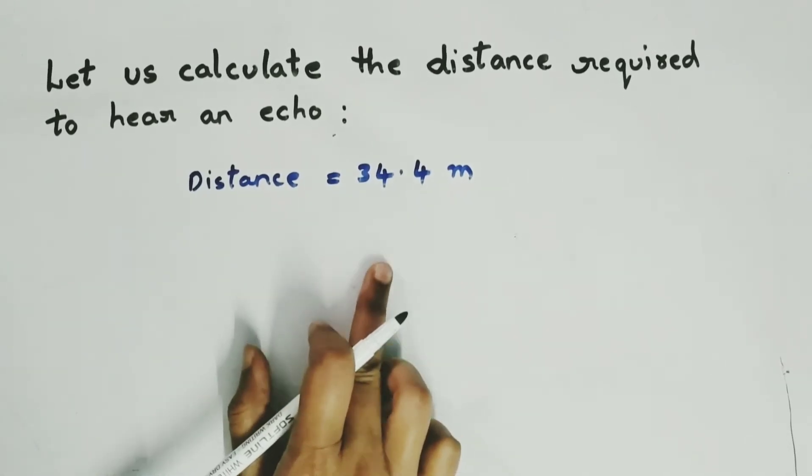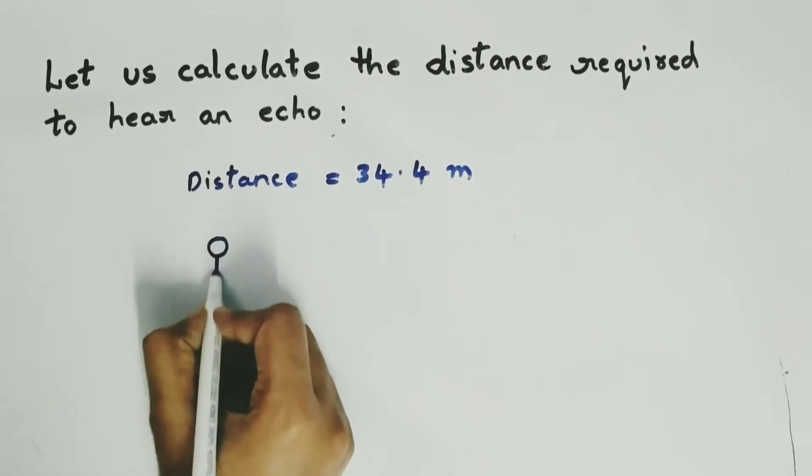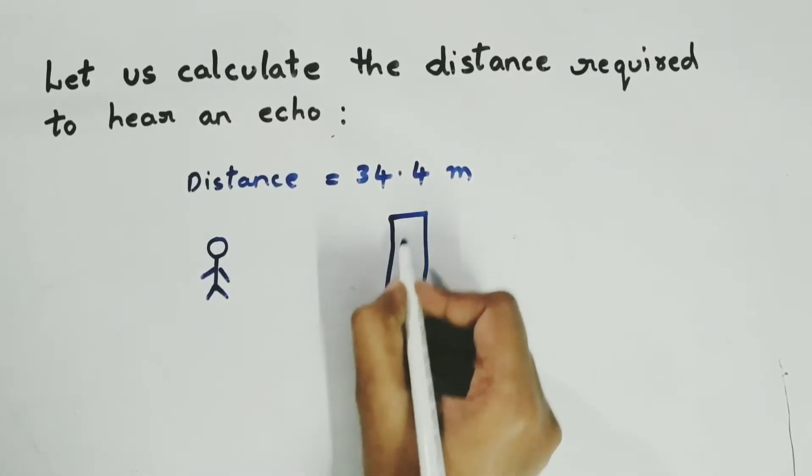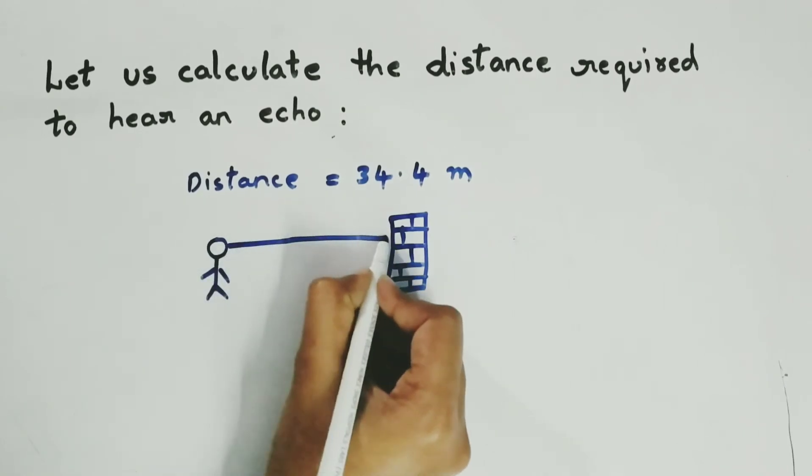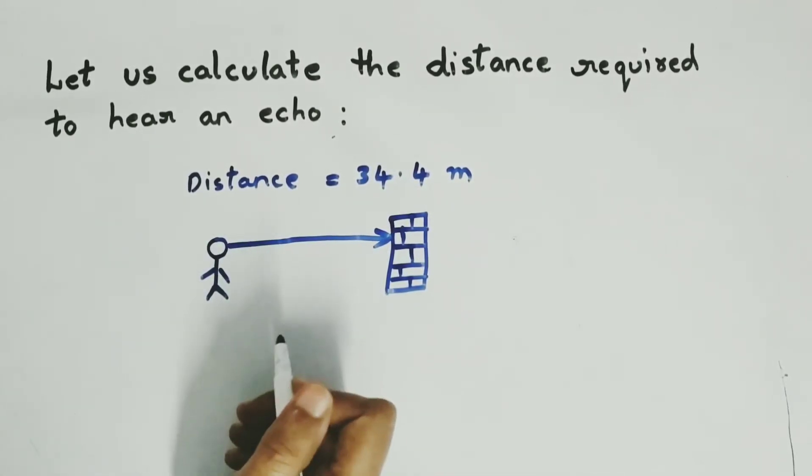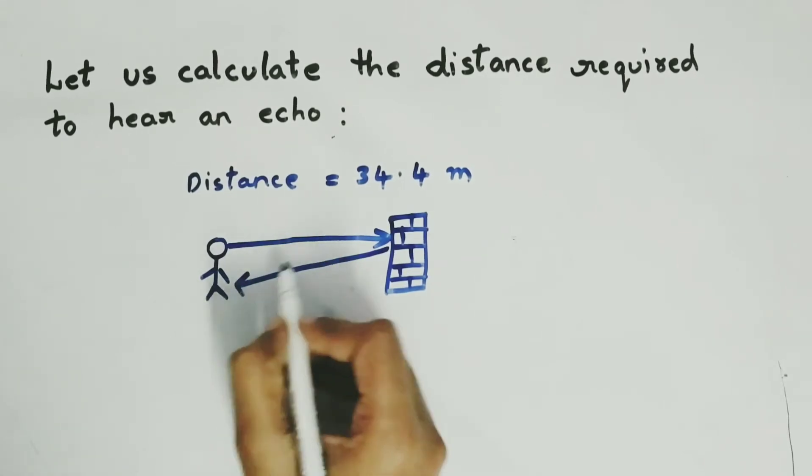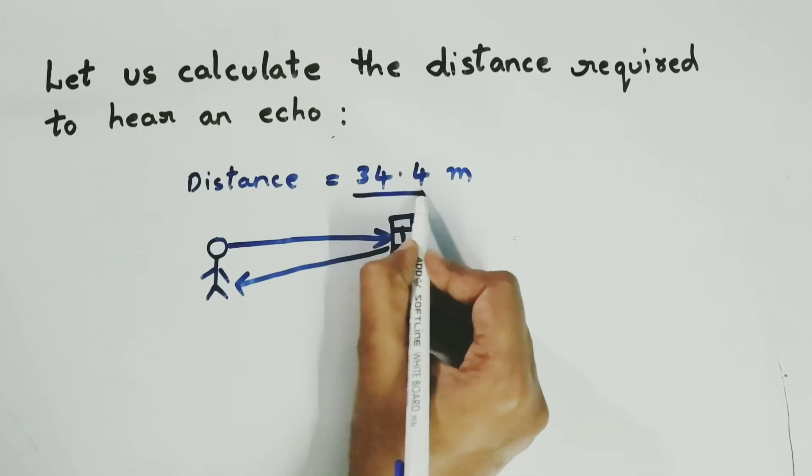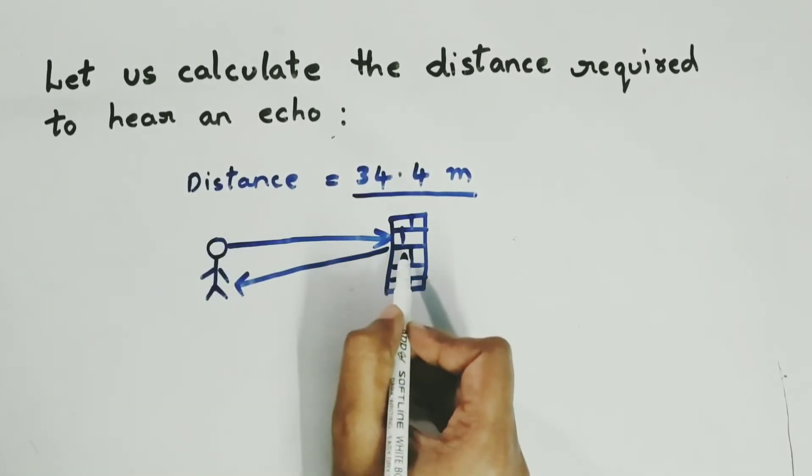So we got distance equals 34.4 meters. But this is the total distance traveled by the original sound and the reflected sound. For example, suppose this is the source of sound and imagine this is a wall, a hard surface. So when the sound is produced from this point to this point it is considered as original sound. And after hitting the hard surface, again the sound is getting reflected back. So the total distance traveled by the original sound and the reflected sound together is 34.4 meters. But we need only the distance between the source of sound and the hard surface.